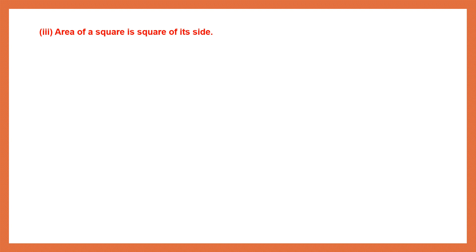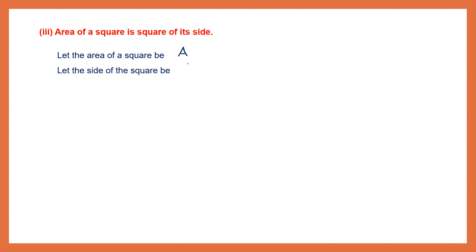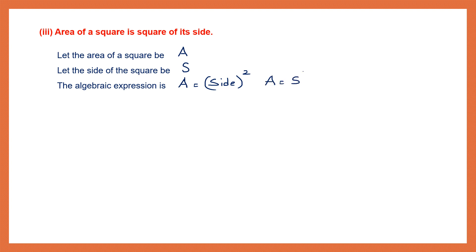Next: Area of a square is square of its side. Let the area be A and the side be S. So the algebraic expression is A = S².